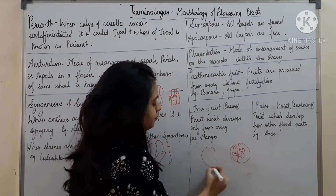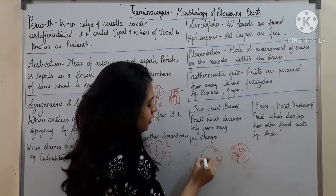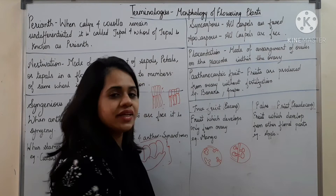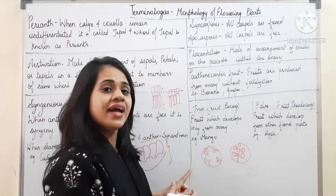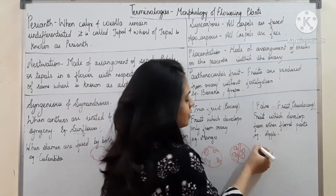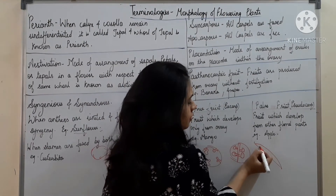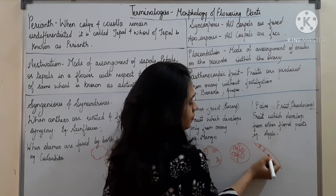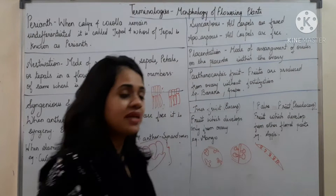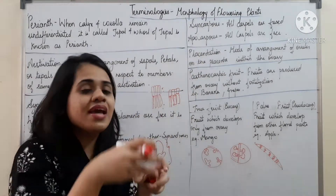Next is placentation — the mode of arrangement of ovules on the placenta within the ovary. The ovary has placenta as well as ovules, and the arrangement of ovules in relation to the placenta is called placentation. For example, if ovules are present on the sides, it is called parietal. If they are arranged as in the case of peas, it is called marginal.